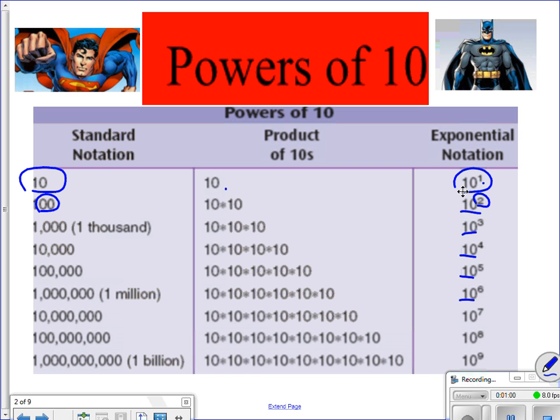So you can kind of see here, 10 to the 9th power is 1 billion down here. Now, keep this in mind, standard notation is our answer, exponential notation is with the exponent, product is our answer. Let's keep going.